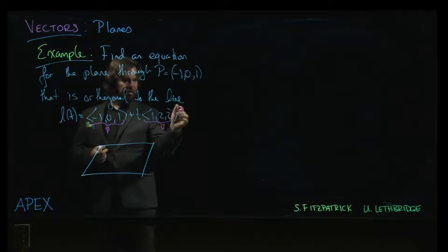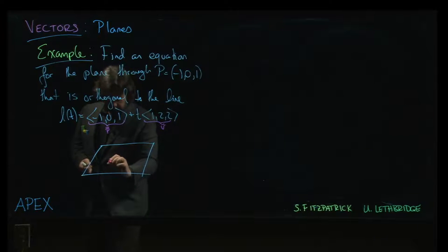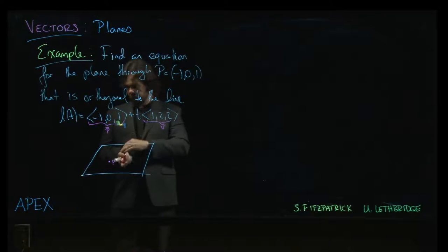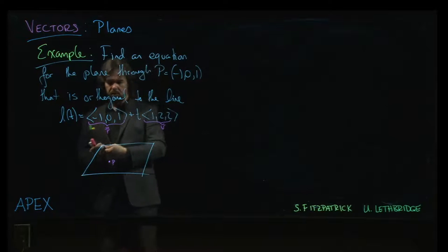So where this information ends up is, well we have some point P that's on the line, or on the plane, and on the line. It's an intersection of the two. And the line is orthogonal to the plane.